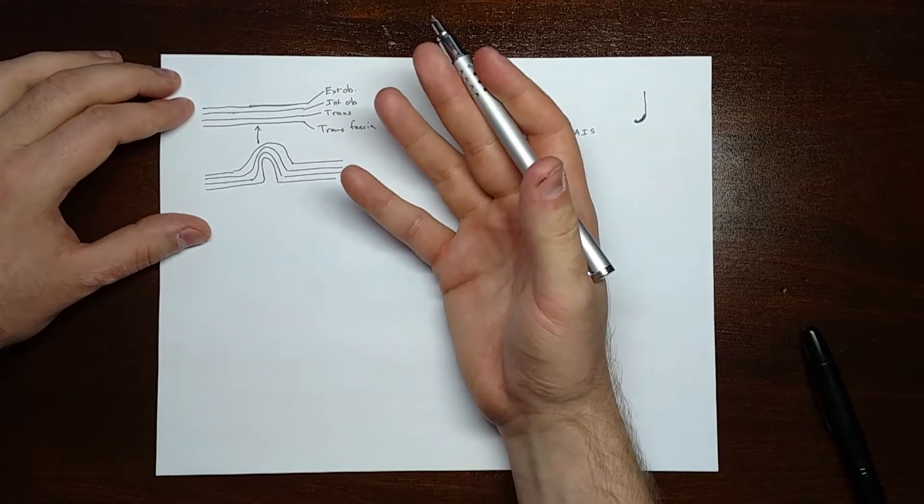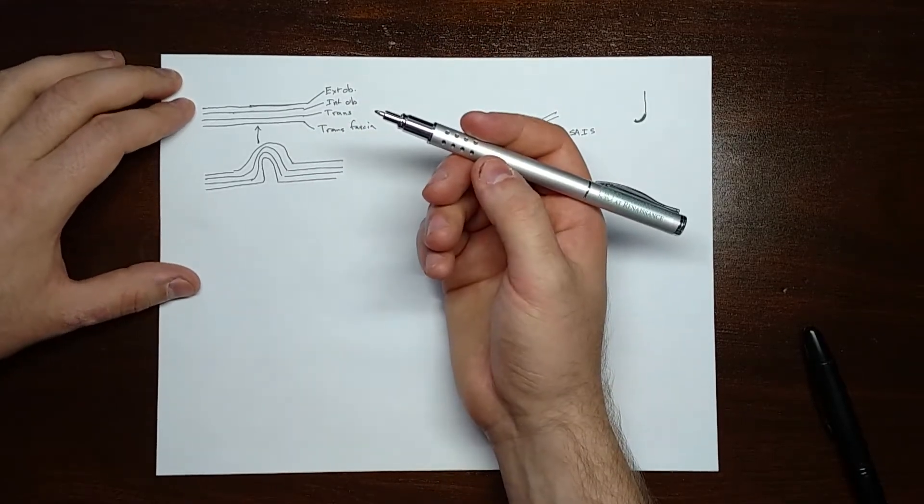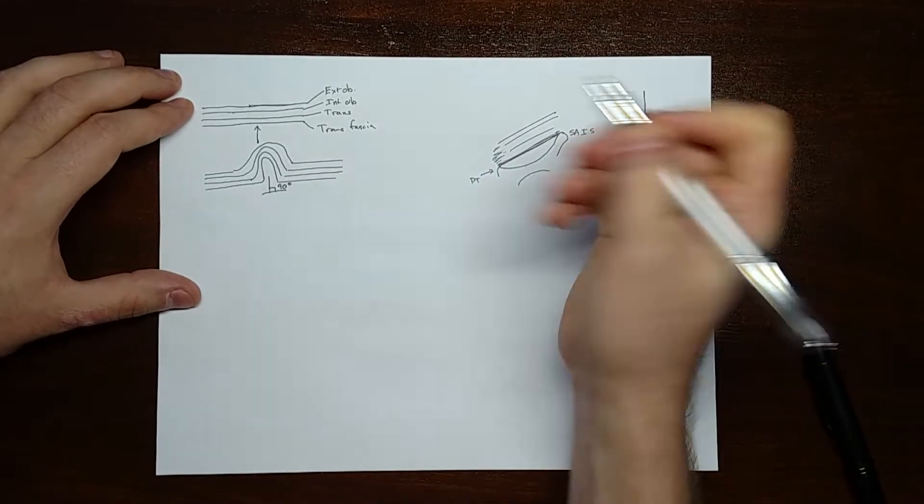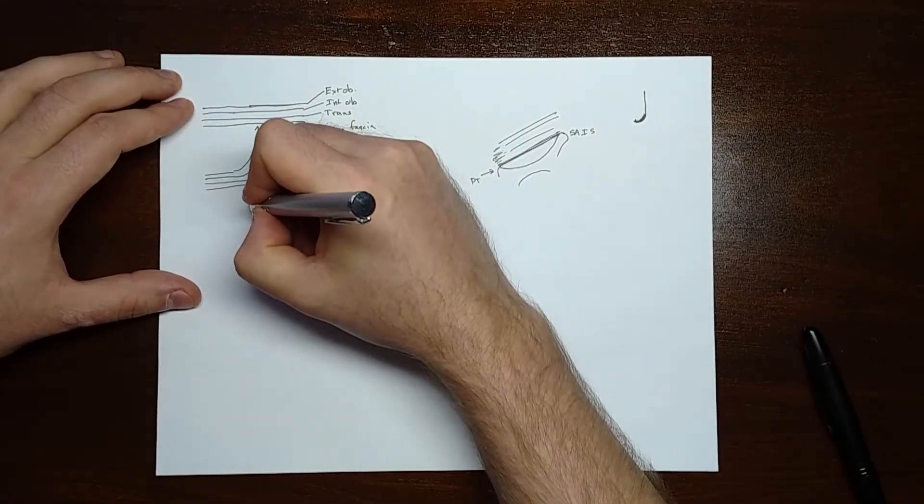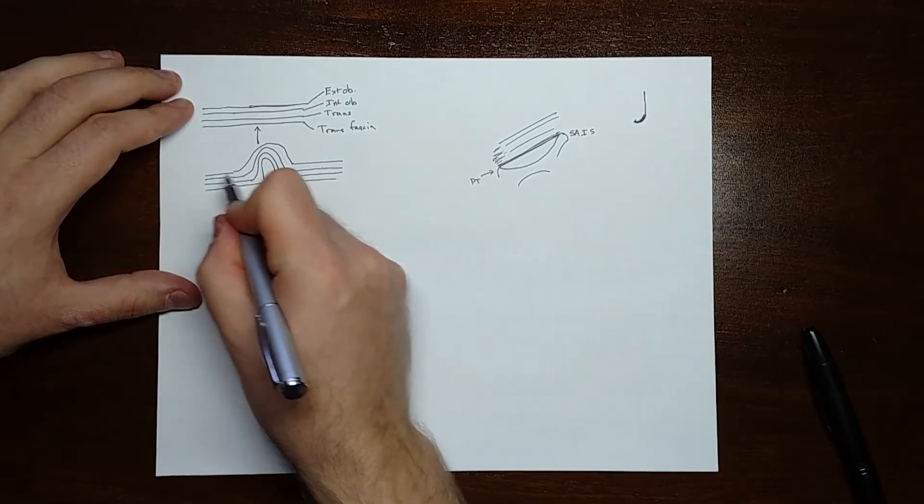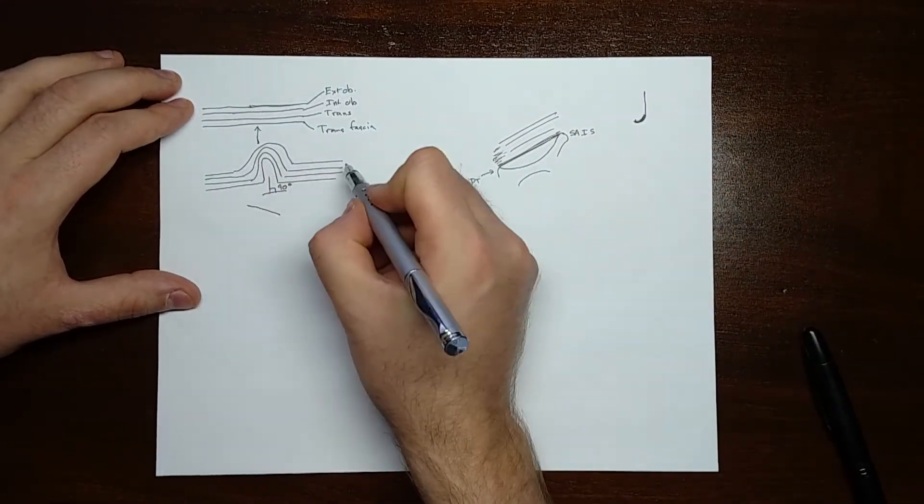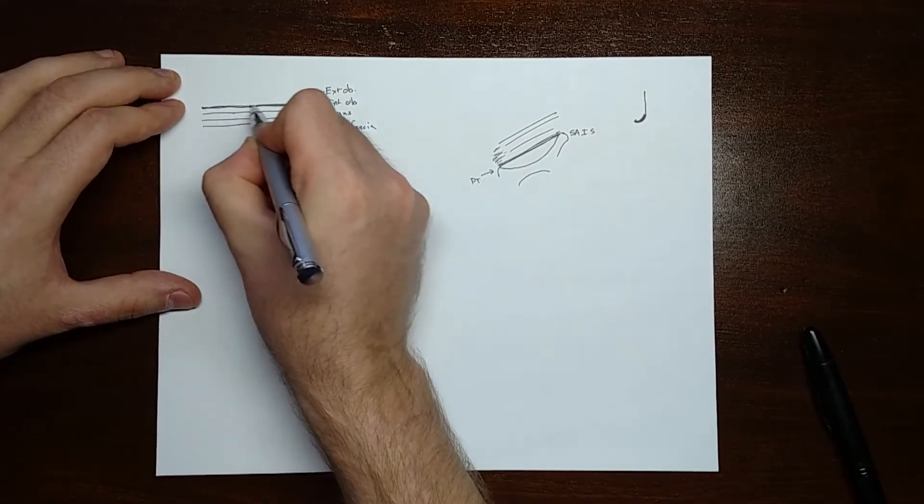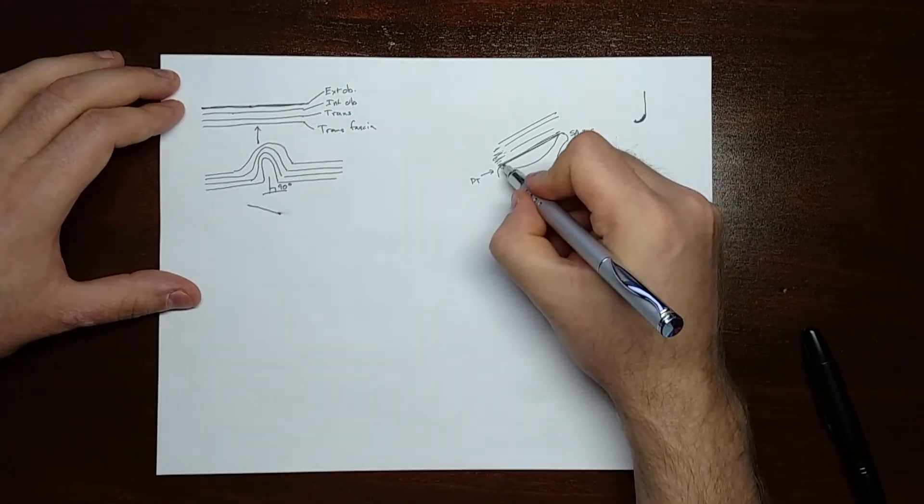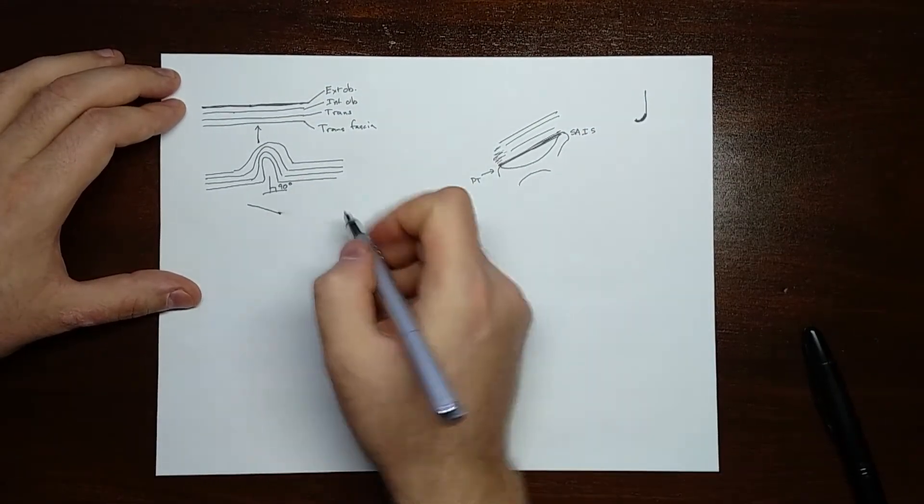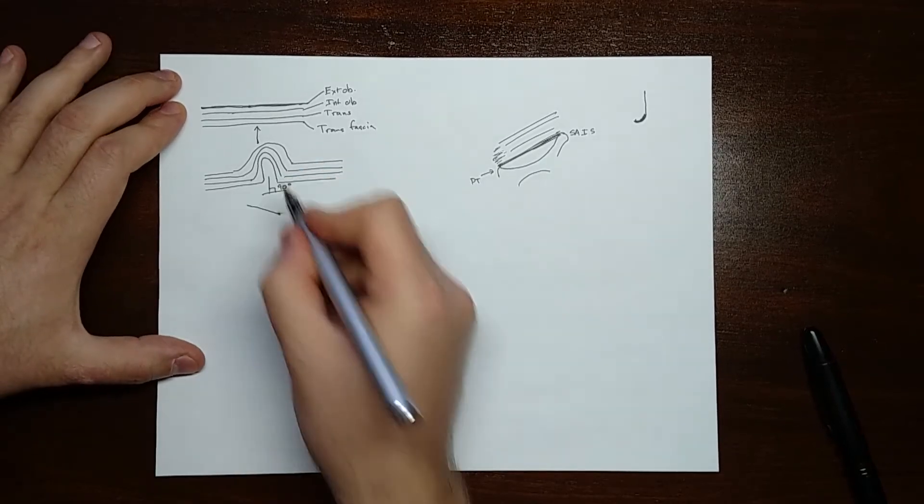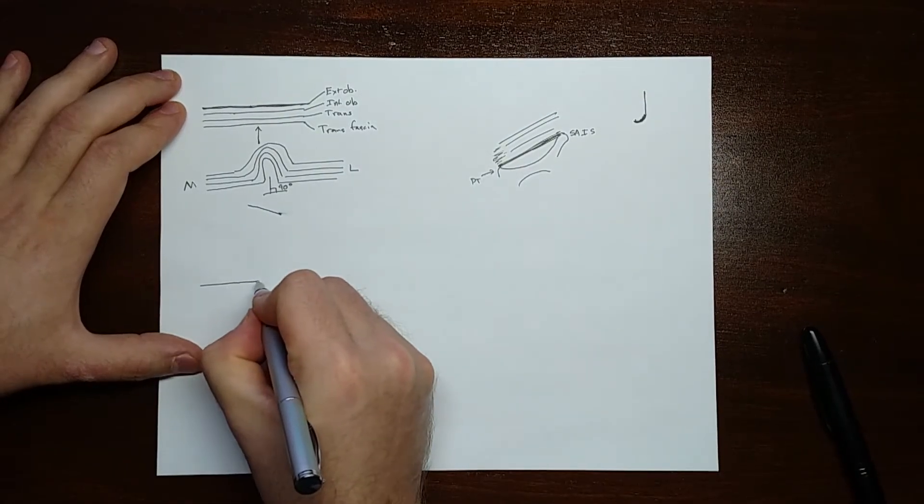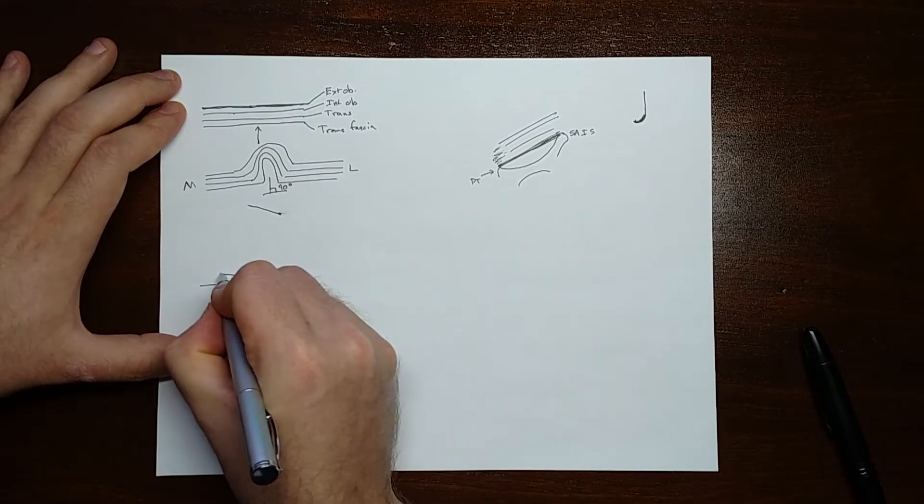The same thing happens when the inguinal canal forms, but it doesn't happen at this 90-degree angle. It happens at a much different angle, almost in the plane of the tissue. If we remember, the external oblique forms the floor of the inguinal canal because it forms the inguinal ligament. We can take this and turn it on its axis. Say this is the medial border and this is the lateral border. We can draw it a little bit more like this instead.